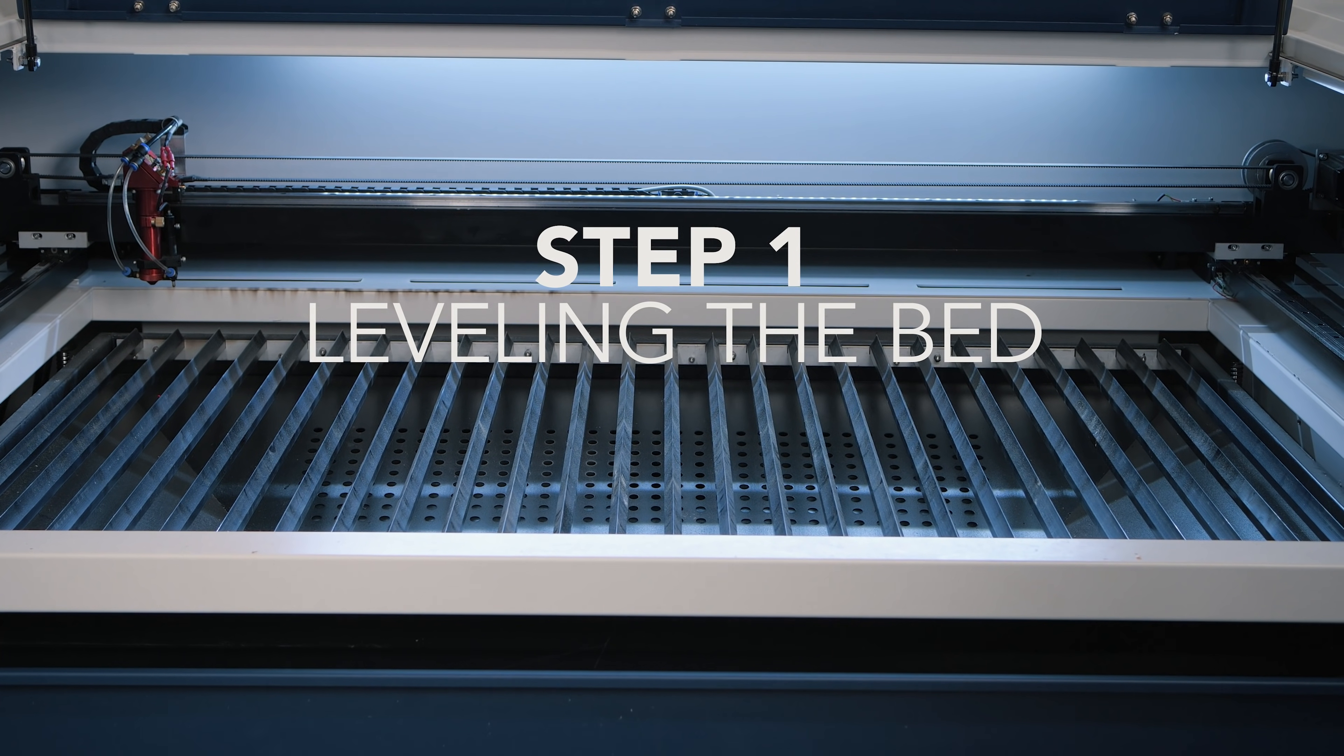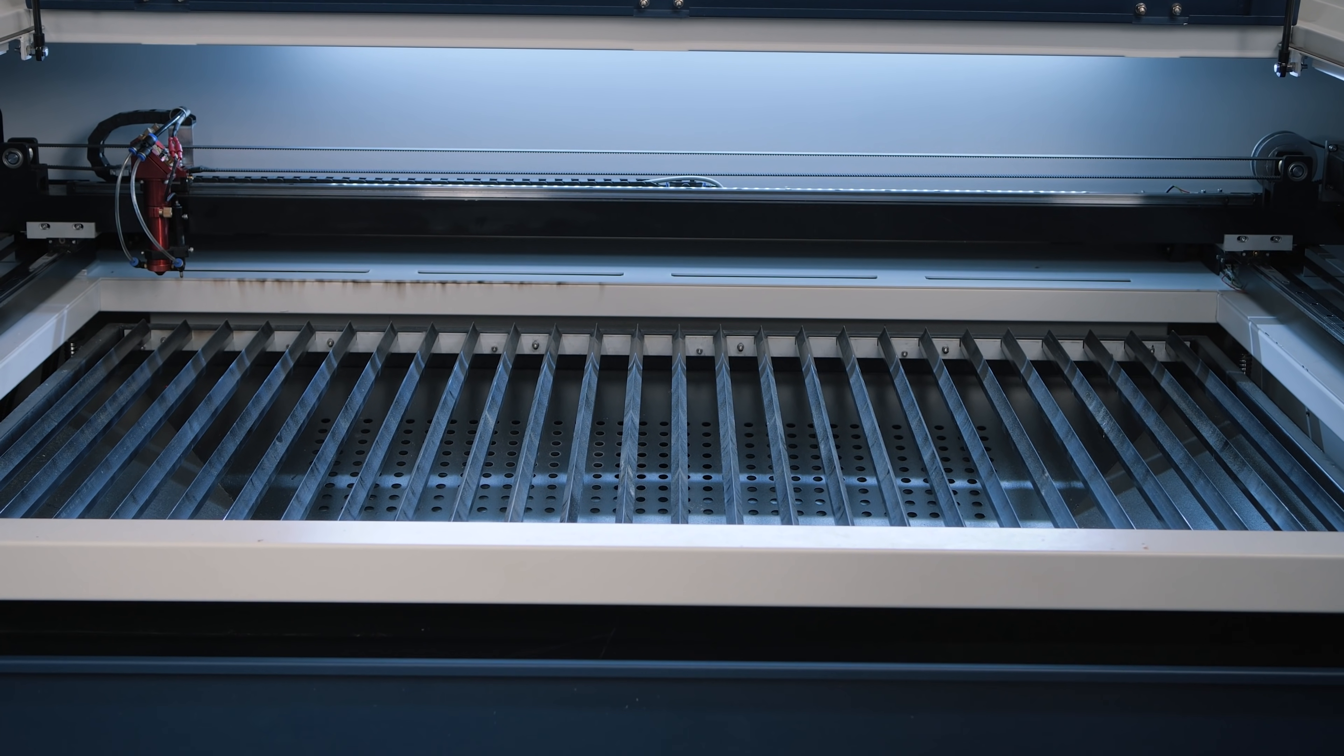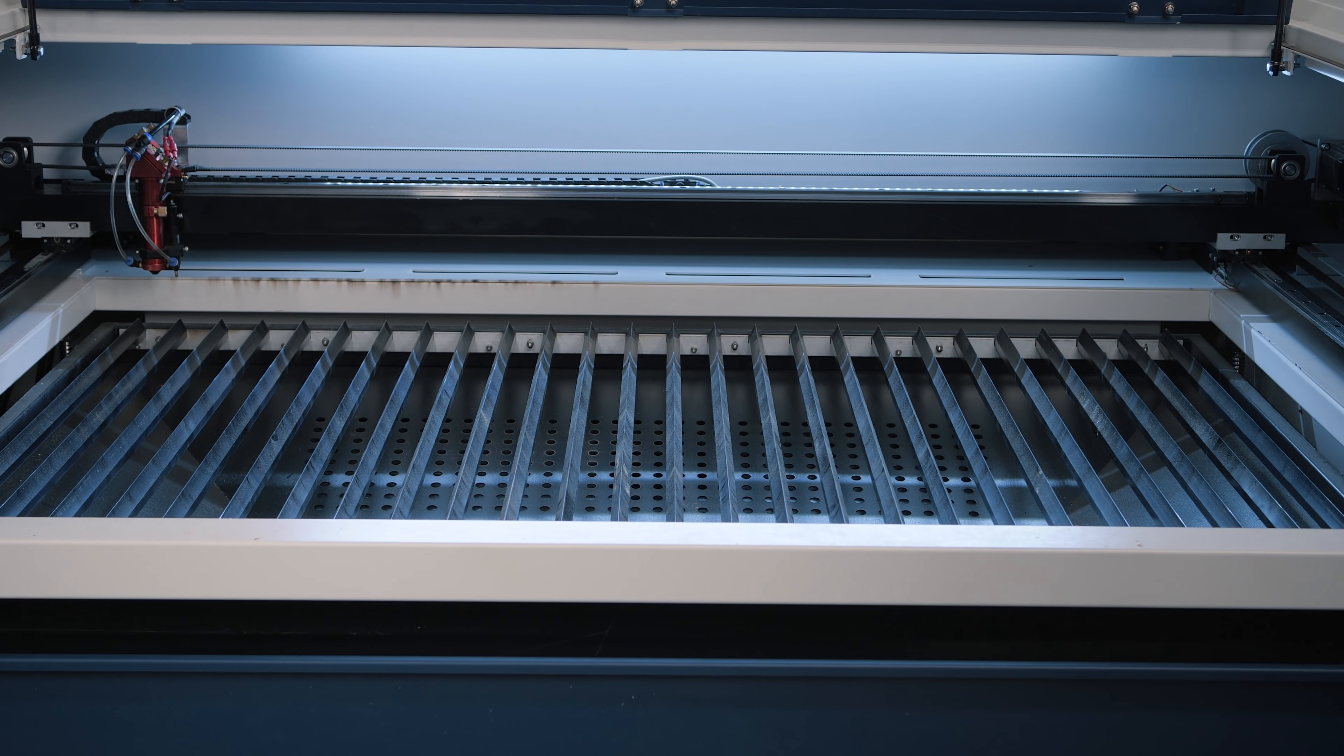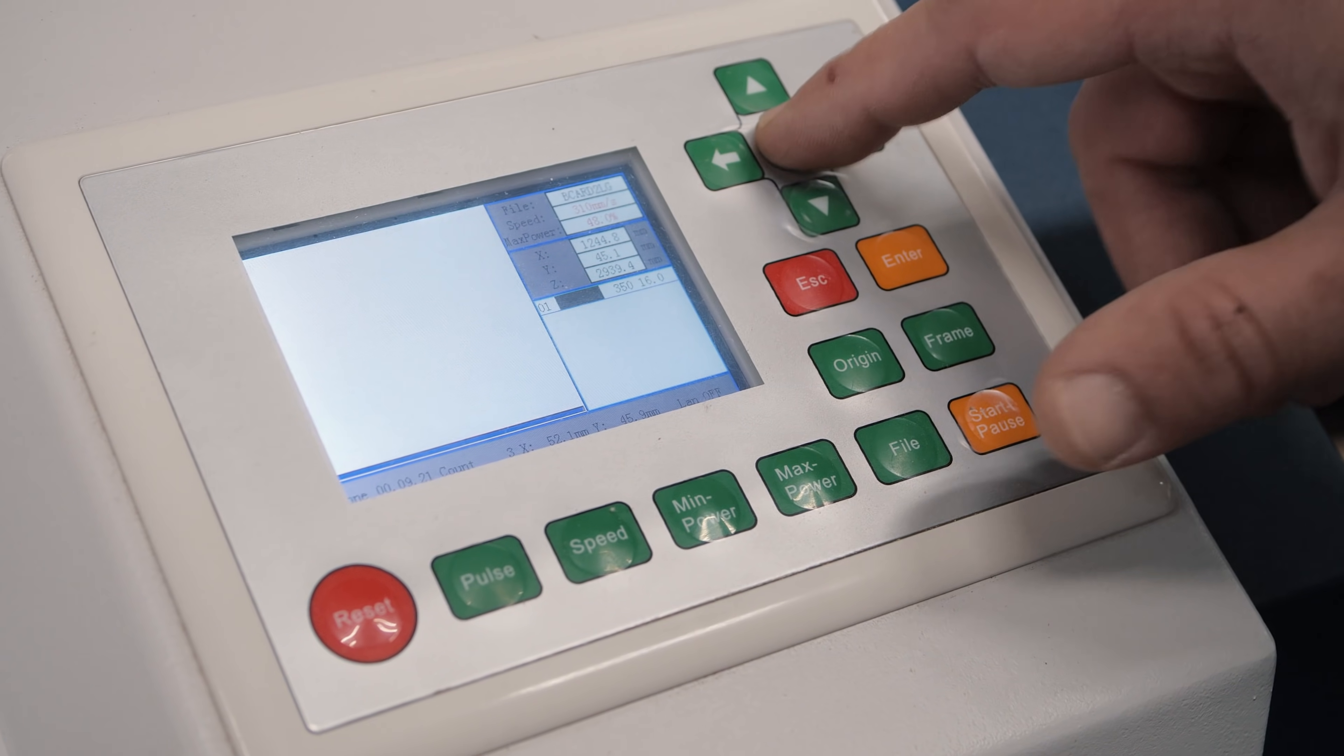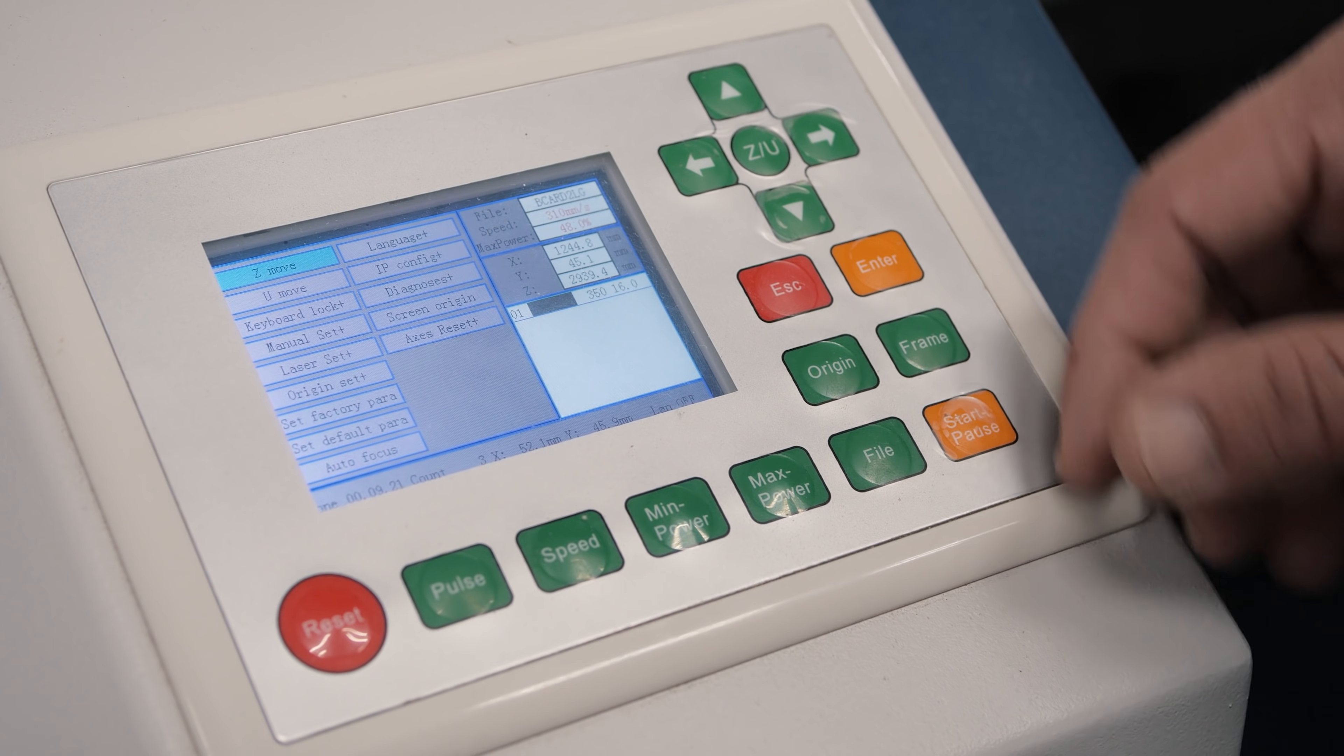To check beam alignment, you want to essentially just check all your corners are the same height, and that's really easy to do. You can raise your bed up. To get to your menu, you just hit Z-U and you would go to Z move.